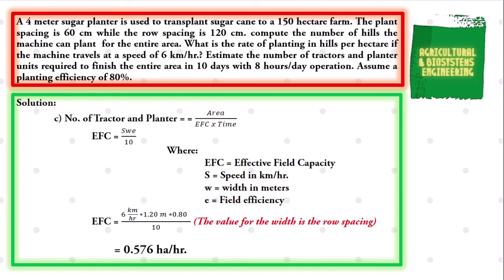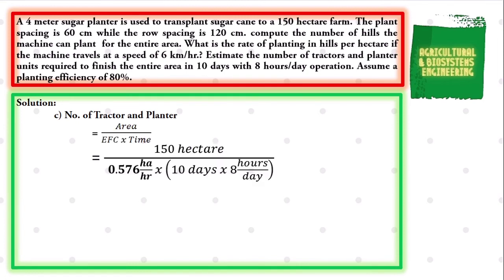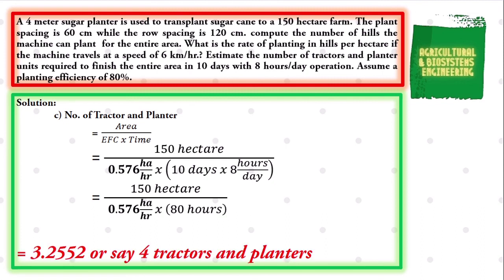Now that we have the EFC value, we go back to the formula for the number of tractors and planters. Substituting: Number = 150 hectares / (0.576 hectares/hour × 80 hours), where the total time is 10 days × 8 hours/day = 80 hours. We get a value of 3.2552, which we round up to 4 tractors and planters.